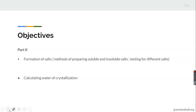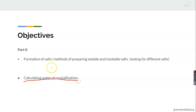Our objectives: first, at the end of this class we should be able to know and explain the formation of salts, citing some examples. Under formation of salts, we have methods of preparing soluble and insoluble salts — we started this last class but we are going to finish up. Also under formation of salts we are looking at testing for different salts, and we must know how to calculate water of crystallization.